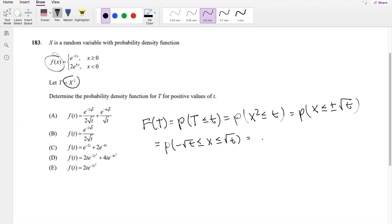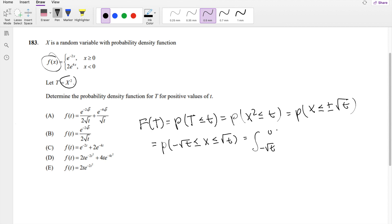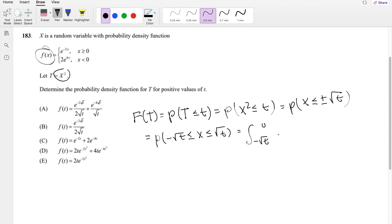So this is equal to, from negative root t to 0, the negative side has this function, 2e to the 4x dx. And the positive side has this function here, 0 to the root t, e to the negative 2x dx.